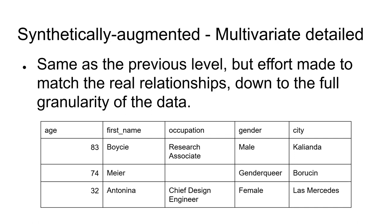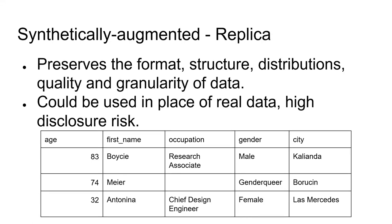Next, we have synthetically augmented multivariate detail data, similar to the previous level but now trying to match the full granularity of our data. Instead of seeing similar relationships at the Manchester level, we might see that all male research associates in Manchester have similar age distributions to those in the original data. And finally, we have synthetically augmented replica data — this data is like the real data in basically every way: it preserves the format, structure, distributions, quality, and full granularity. The purpose here is to use this data instead of the real data, but it's very likely in the UK that you would only get access to it in a secure research facility.